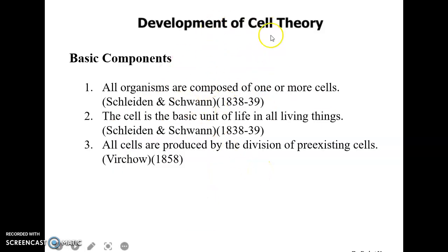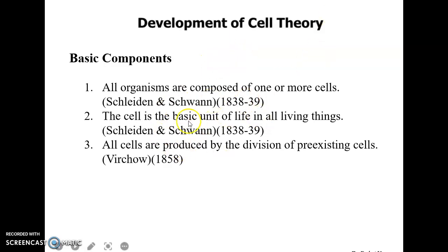So here is the cell theory, and here are its basic components. First, all organisms are composed of one or more cells. Second, these cells are the basic units of life in all living things. Third, all cells are produced by the division of pre-existing cells.